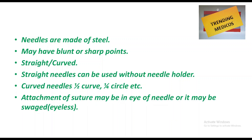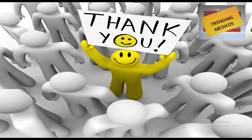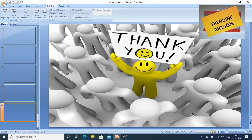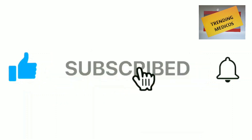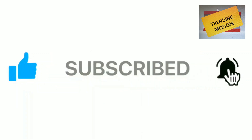There are eye needles and swaged needles. Needles are made of steel and may have blunt or sharp points. They may be straight or curved. Straight needles can be used without a needle holder, but are difficult to handle. Curved needles may be half circle or one-fourth of a circle. Suture attachment may be through the eye of the needle or swaged, meaning eyeless.